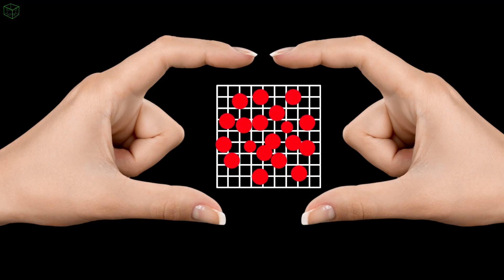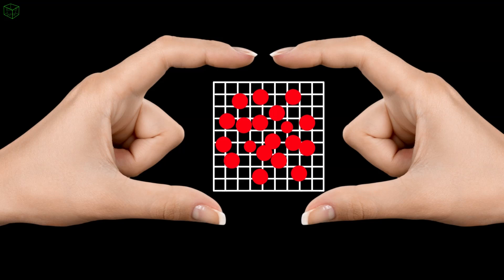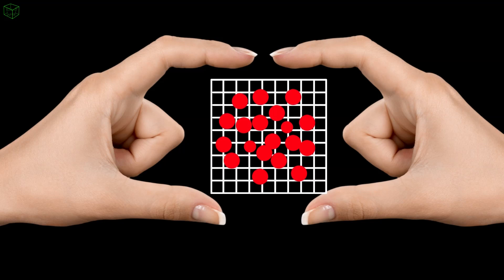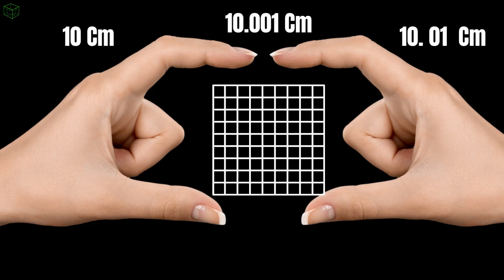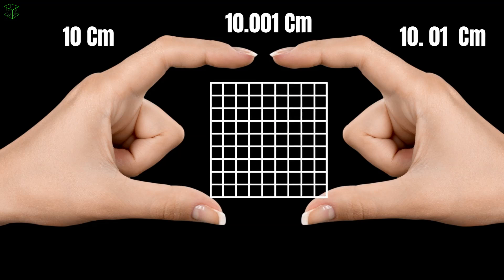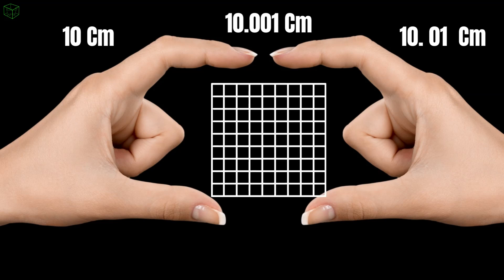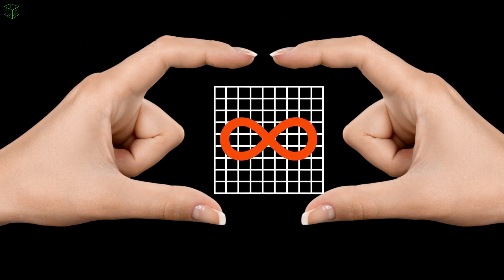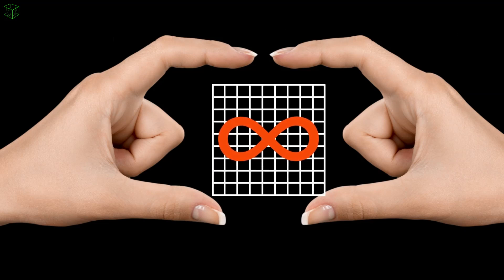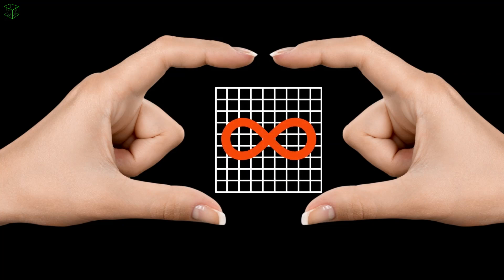If space is perfectly continuous, like the mathematical line between zero and one, then there are infinite possible positions in space. A particle could be 10 centimeters from the hands, or 10.01 centimeters, or 10.91 centimeters, or any infinity of different possibilities. And this infinity literally fits between the two hands. There are infinite points of space between two hands.